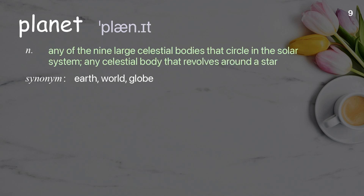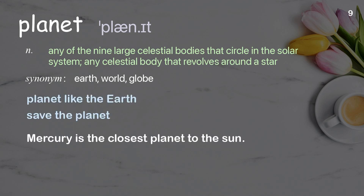Planet: any of the large celestial bodies that circle in the solar system; any celestial body that revolves around a star. Examples: planet like the Earth, save the planet. Mercury is the closest planet to the sun.